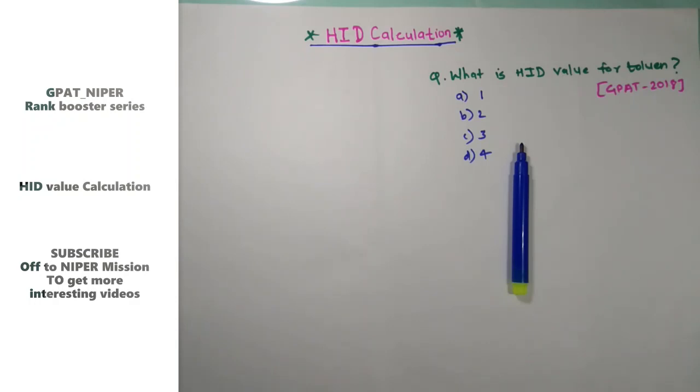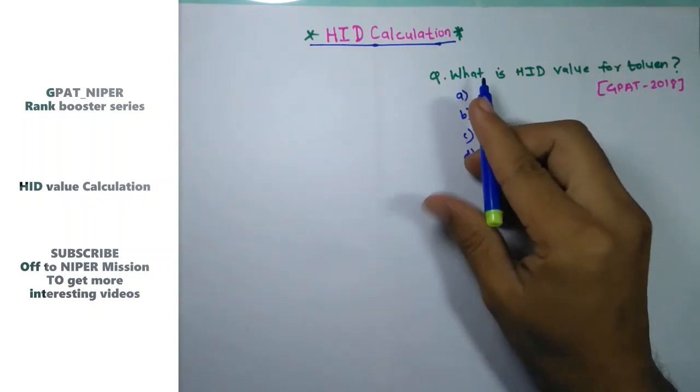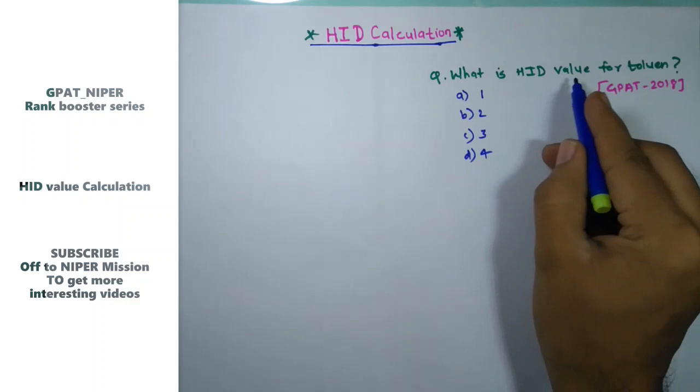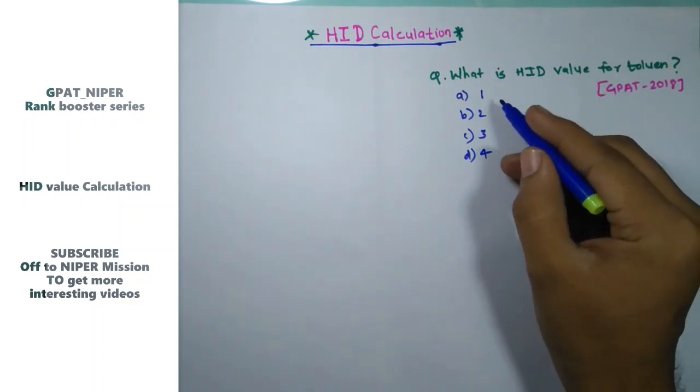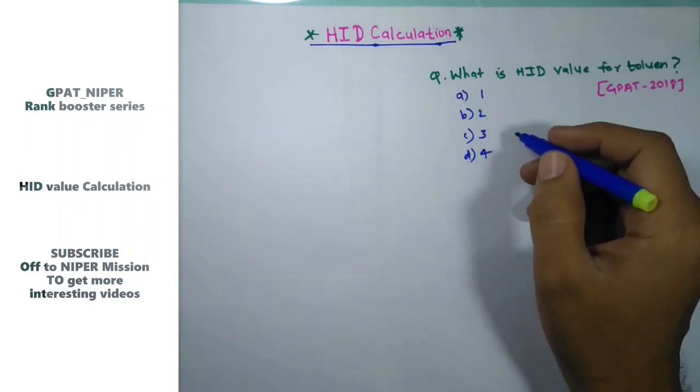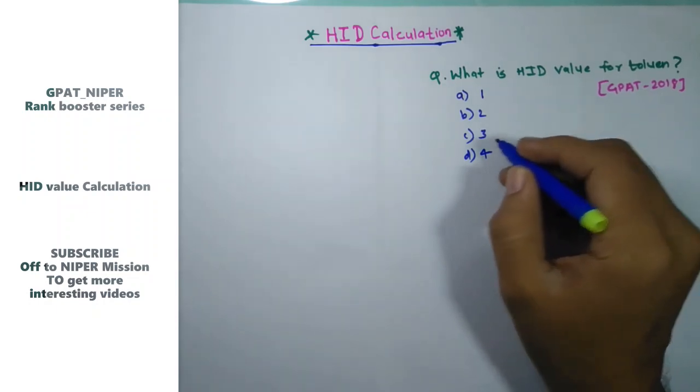Let's start with this question which was asked in the J-PAD 2018: What is the HID value for toluene? This is a calculation question that most students skip, but it is very simple and we will discuss it in today's session.